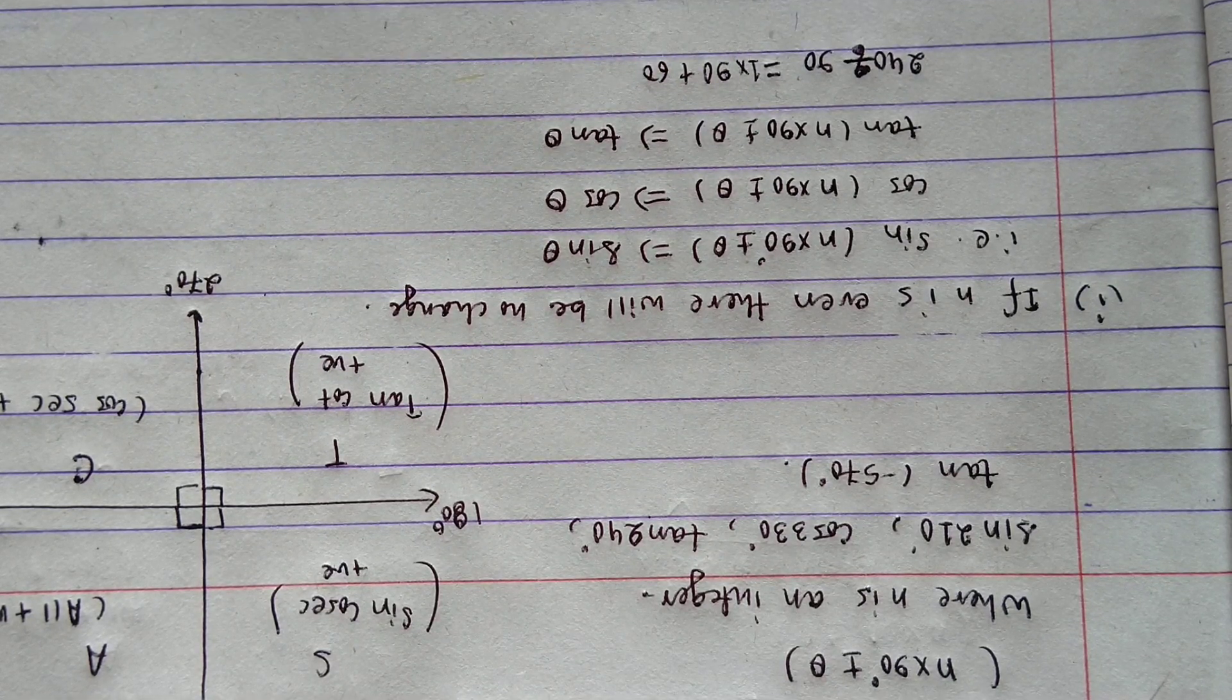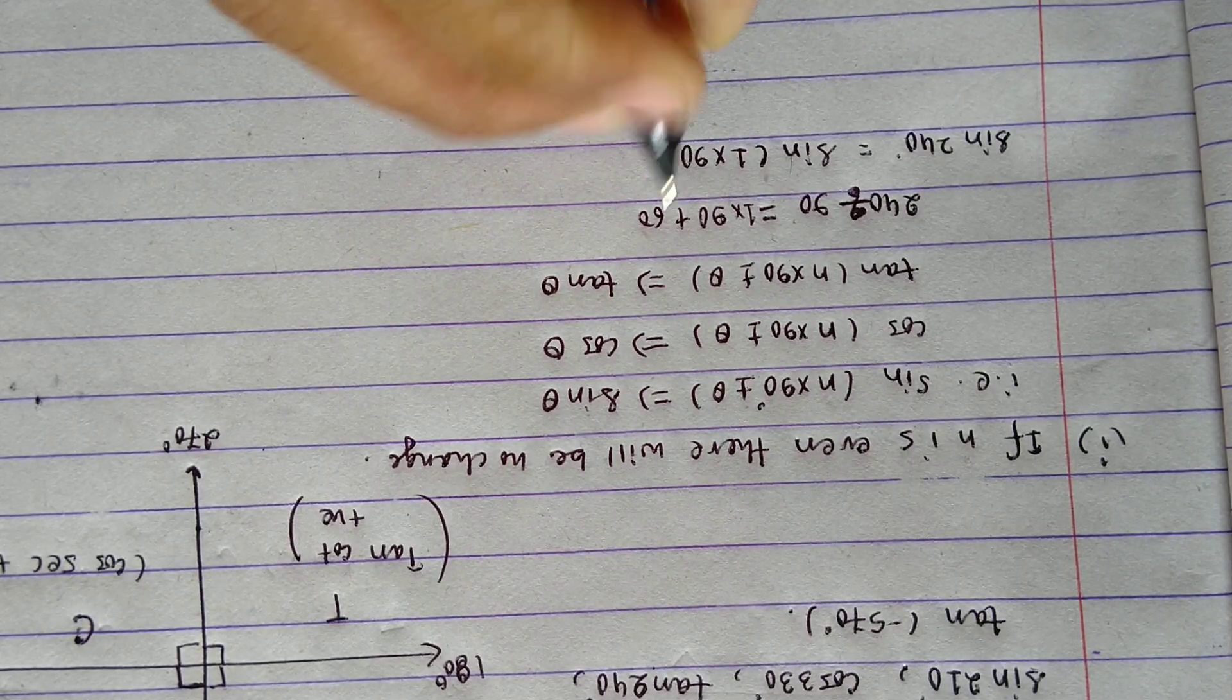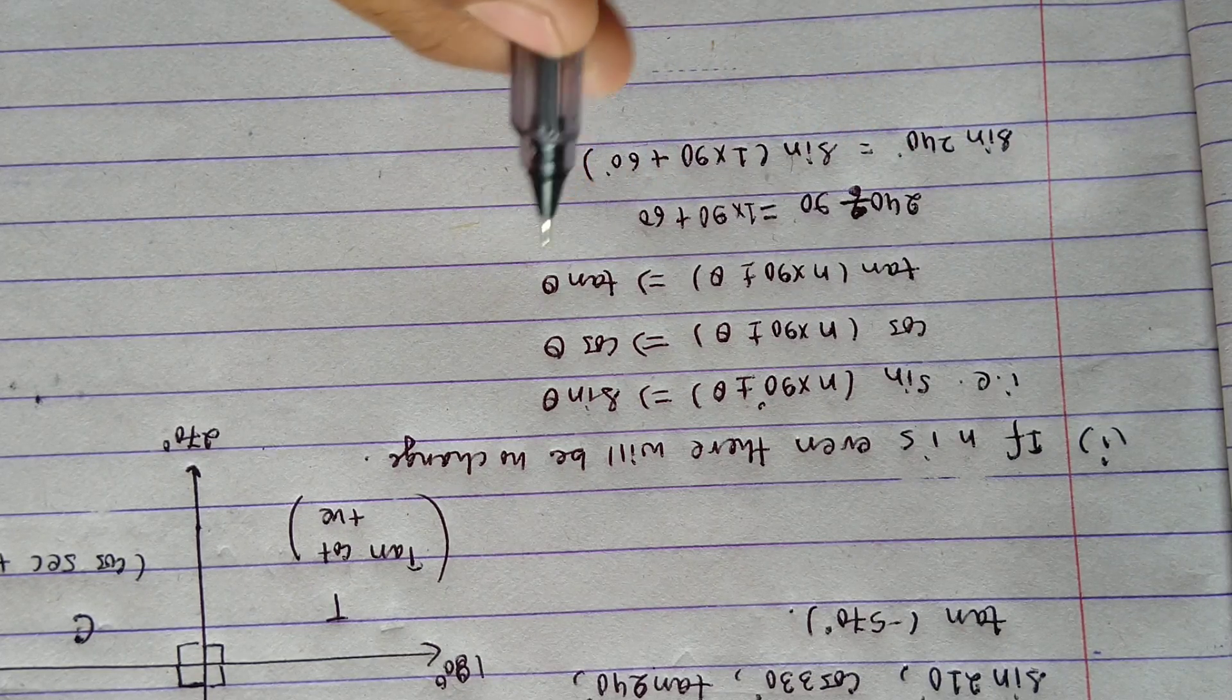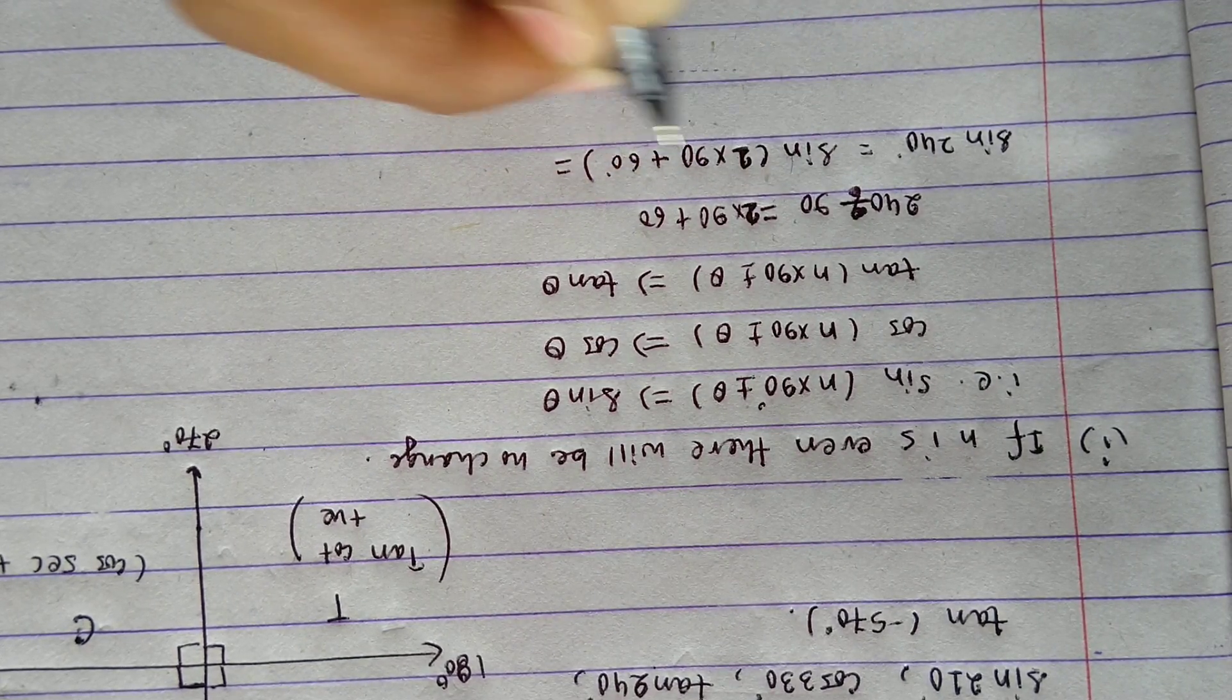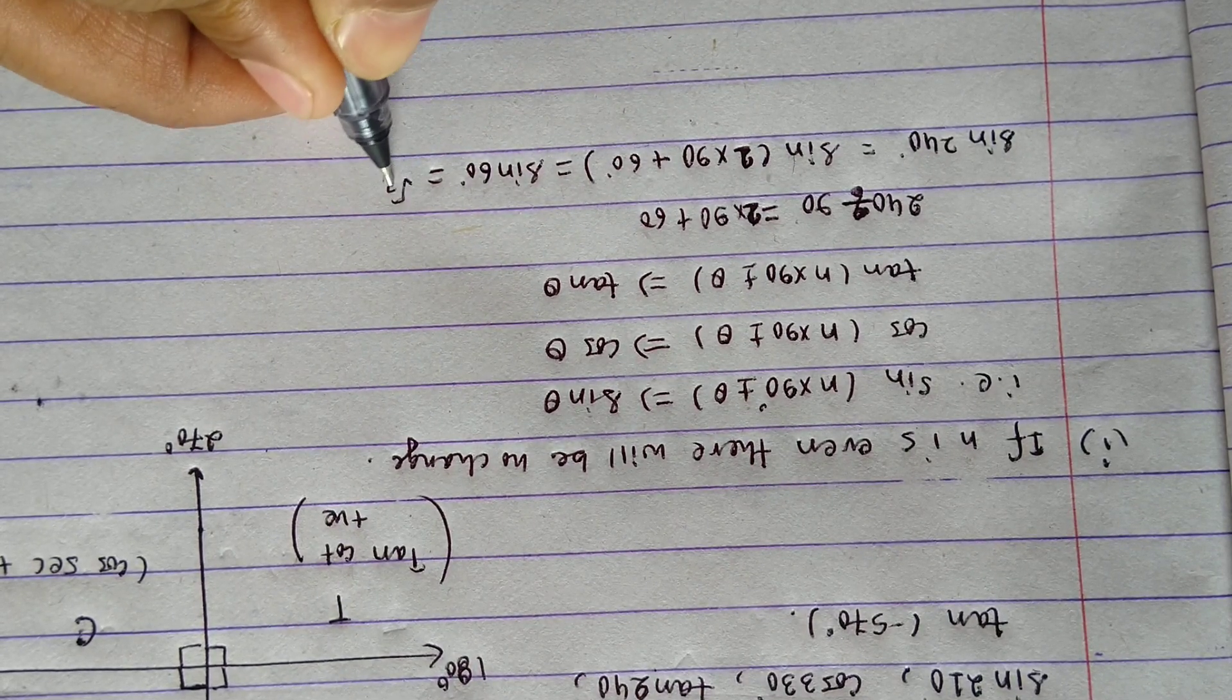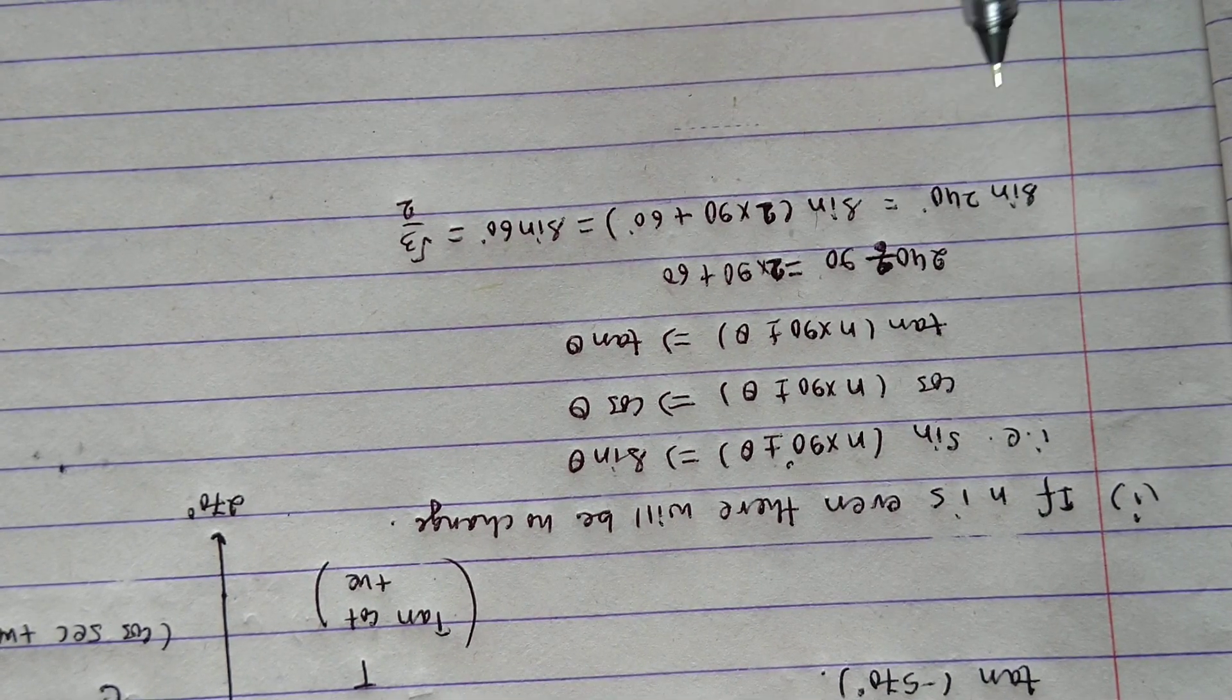According to this formula, if n is even here—n is equal to 2 and it is even—so it does not change. The value is tan 60. The standard value of tan 60 is root 3. This way we can easily evaluate the value of tan 240 as root 3.